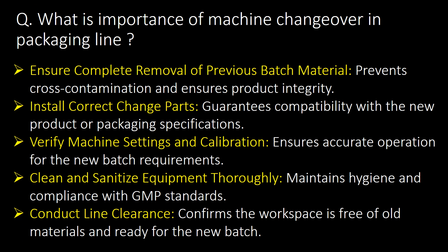What is the importance of machine changeover in packaging line? Here are 5 important points for machine changeover: 1. Ensure complete removal of previous batch material. 2. Install correct change parts. 3. Verify machine settings and calibration. 4. Clean and sanitize equipment thoroughly. 5. Conduct line clearance.